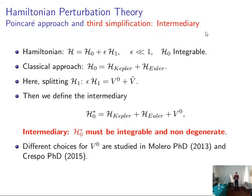So, in fact, we are building here a model that is integrable and not degenerated. You can check for different choices for this V zero in these two works here. This is the concept of intermediary.